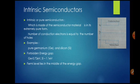In intrinsic semiconductors, the number of electrons equals the number of holes in the conduction band. Examples of intrinsic semiconductors are pure germanium and pure silicon. The forbidden energy gap for germanium is 0.72 eV and for silicon is 1.1 eV. The Fermi level lies exactly in the middle of the energy gap. The Fermi level is the highest energy level that an electron can occupy.